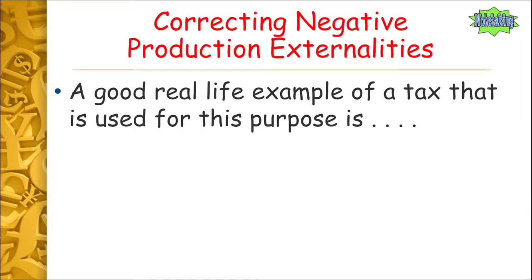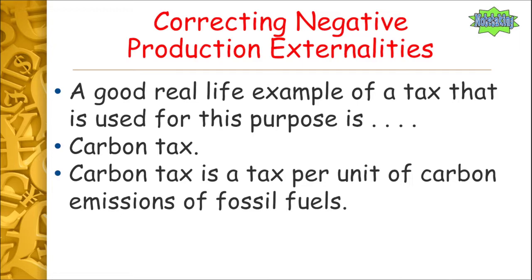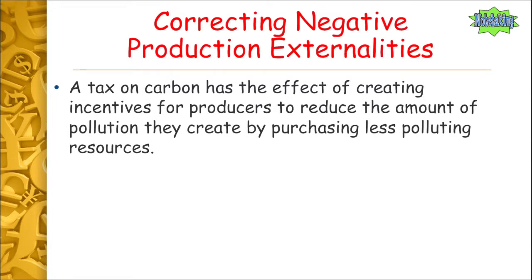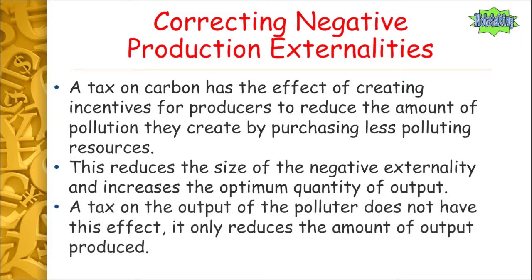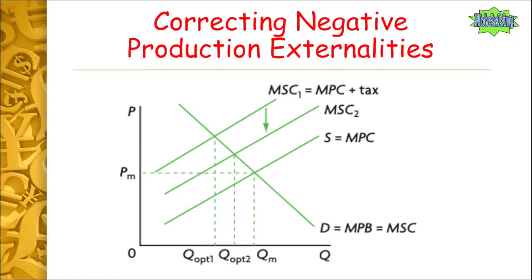A good real-life example of a tax used for this purpose is the carbon tax — an Irish example, but many countries around the world have a similar tax. A carbon tax is a tax per unit of carbon emissions from fossil fuels. It creates incentives for producers to reduce the amount of pollution they create by purchasing less polluting resources, reducing the negative externality. Taxing the pollutant itself — rather than just output — is more effective because taxing output only reduces the amount produced, whereas the carbon tax incentivizes switching to cleaner resources.